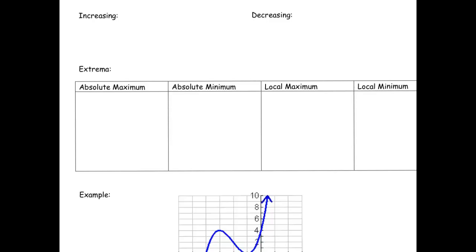When we read graphs from left to right, just like we read words, we can either see if the values are increasing or decreasing. So when they are increasing, that means they're getting bigger. When reading a graph from left to right, the y values are getting bigger.